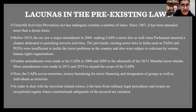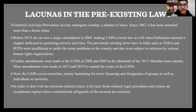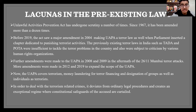Talking about the lacunas that were there in the pre-existing laws, UAPA has gone under amendment quite a number of times. In 2004, the Act saw an amendment making UAPA a terror law as well, when Parliament inserted a chapter dedicated to terrorist activity. TADA and POTA, the previously existing laws, were insufficient to tackle the terror problems of the nation. TADA specifically was subjected to criticism by various human rights organizations. UAPA saw amendments in 2008 and 2009 in the aftermath of the 26/11 Mumbai terror attacks, and also in 2012 and later in 2019 to expand the scope of the Unlawful Activities Prevention Act. Issues such as terrorism and money laundering for terror financing are covered under the ambit of this law.